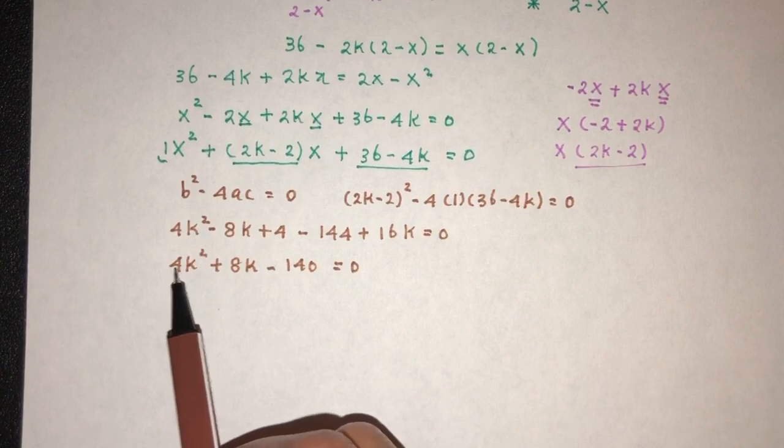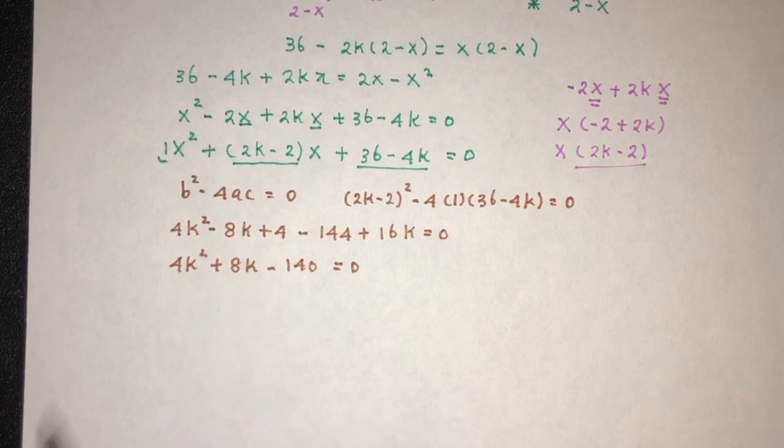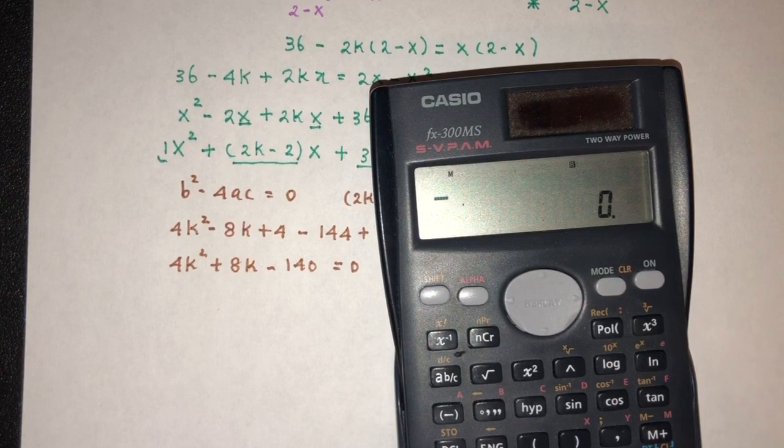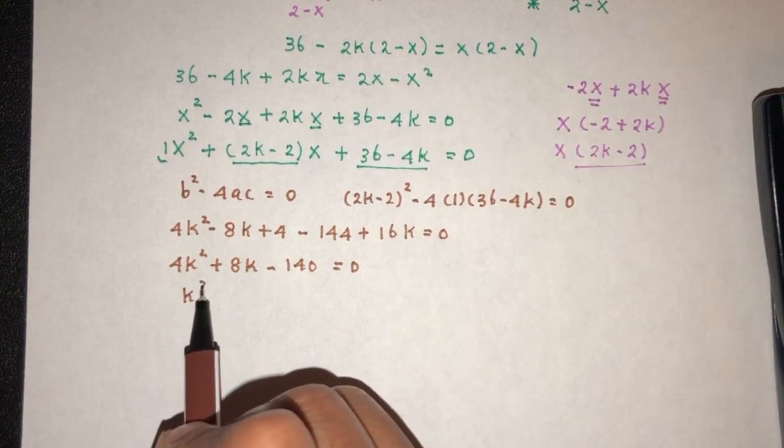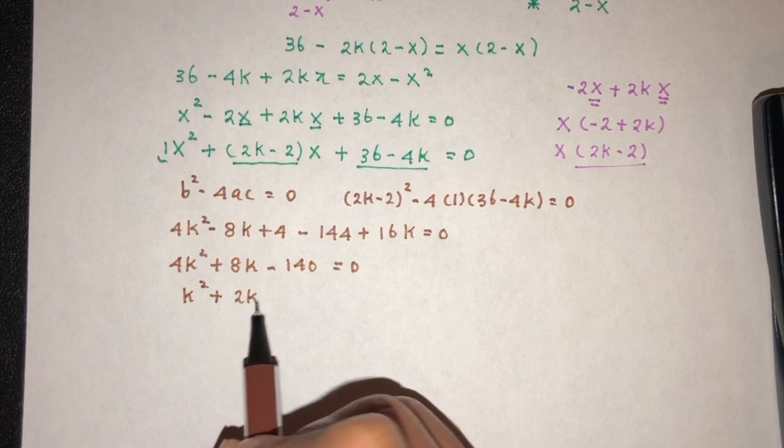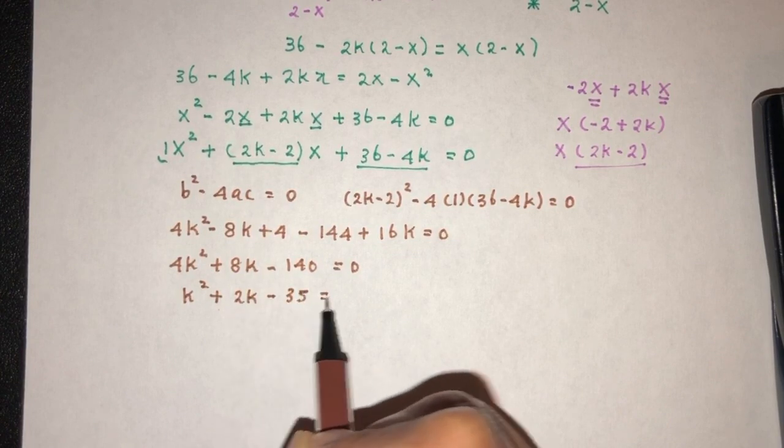Now as we can see, we have 4 here, 8 here, and 140. So we can try to divide by 4 and see what happens. That will become k² plus 2k minus 35 equal to zero. So now we have a quadratic equation we can solve one by one.